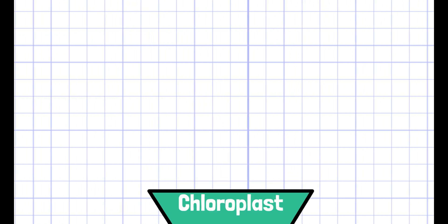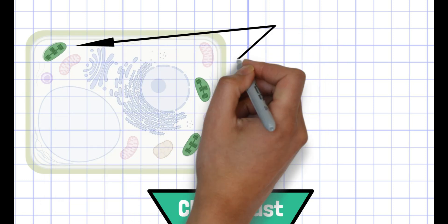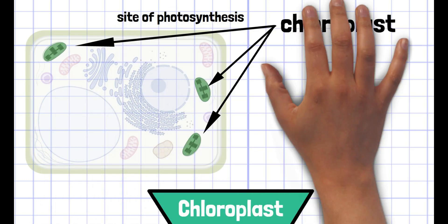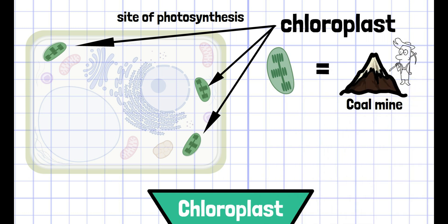Now let's look at chloroplasts. Chloroplast is the site of photosynthesis. This structure is like a mine of coal, which allows you to produce a source of energy within the cell. Mitochondria was the power plant of the cell, but in order to produce power, we need a source of energy like coal.